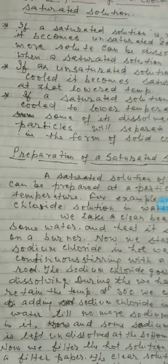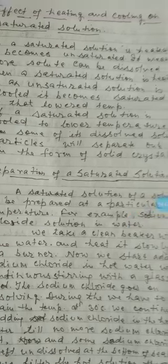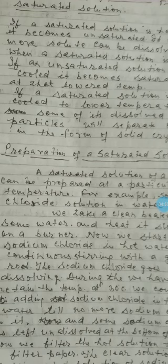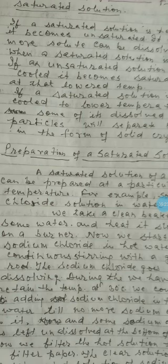First, if we raise the temperature of a saturated solution — that is, if we heat a saturated solution — it becomes unsaturated. This means more solute can be dissolved in a saturated solution by raising temperature or by heating. This is because when we heat a saturated solution, the movement of solvent particles increases due to increase in energy, and they go far away from one another, providing more space to accommodate more solute particles.